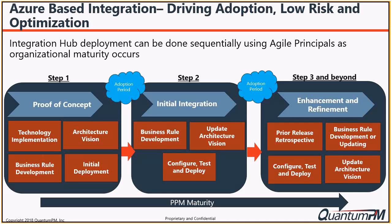I like to have a set of super users within an organization who really learn the solution and take that as an opportunity to build capability as we progress. You'd have a POC period — usually 30 to 60 days — and then you'd have adoption and build organizational maturity. Then figure out what the initial integration would look like, develop business rules for what it would look like, and then configure, test, and deploy. The question is what are the first primary integrations you'd want to achieve and what reports and dashboards would you need?